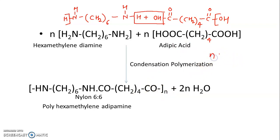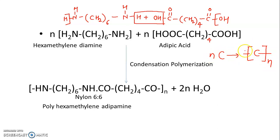The resulting polymer structure is: -NH-(CH2)6-NH-CO-(CH2)4-CO- with subscript n, written in square brackets. This is your Nylon 6-6 polymer. In the polymerization reaction, on the left side write nM and after polymerization write in square brackets with subscript n. The name Nylon 6-6 comes from hexamethylene having 6 carbons and adipic acid having 6 carbons, with 2n water molecules eliminated.